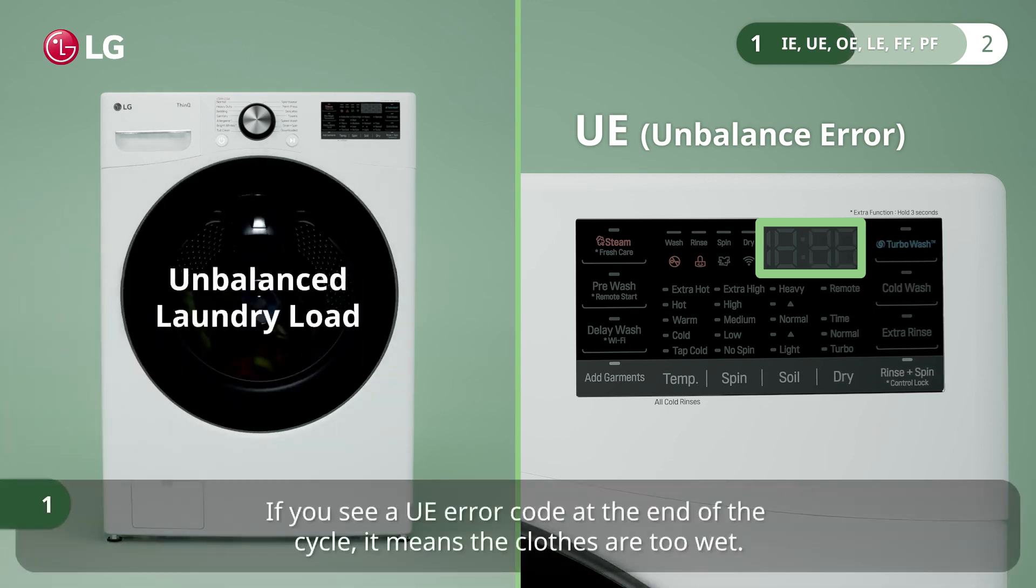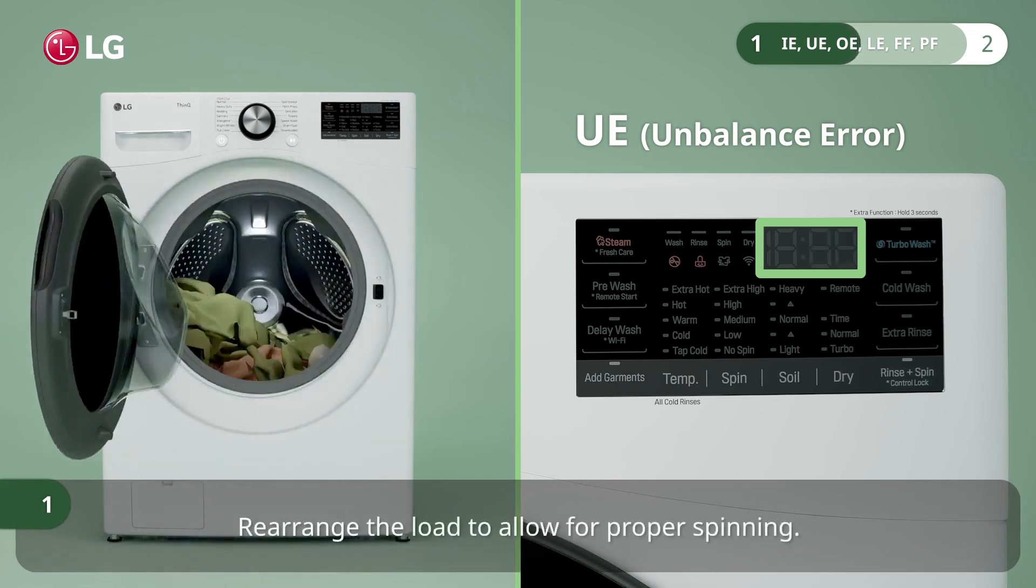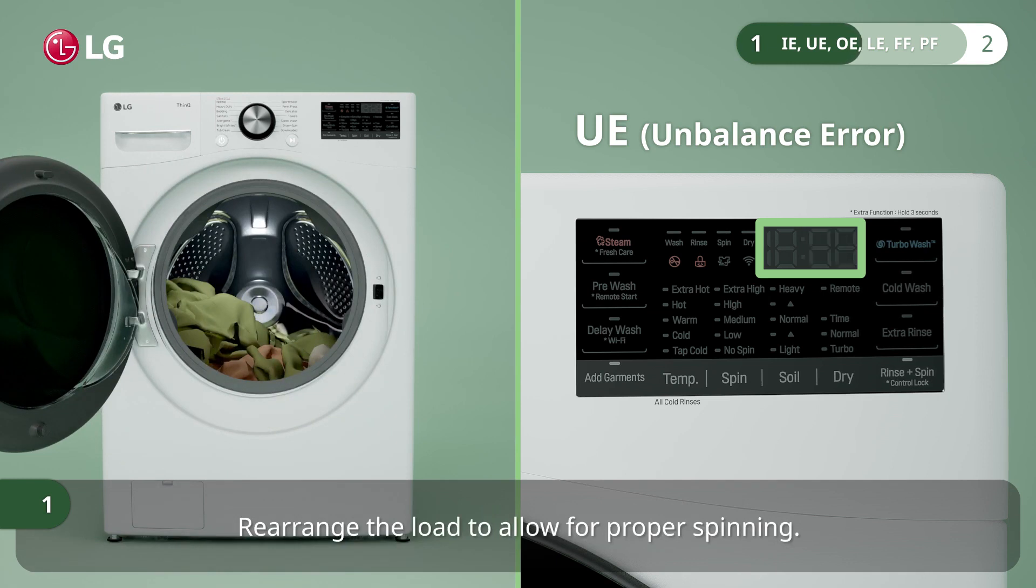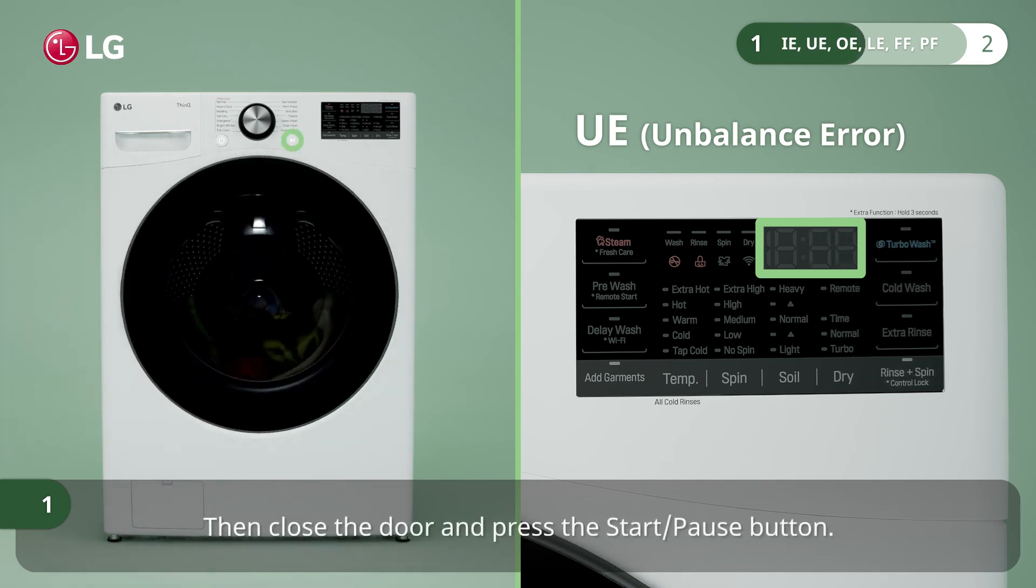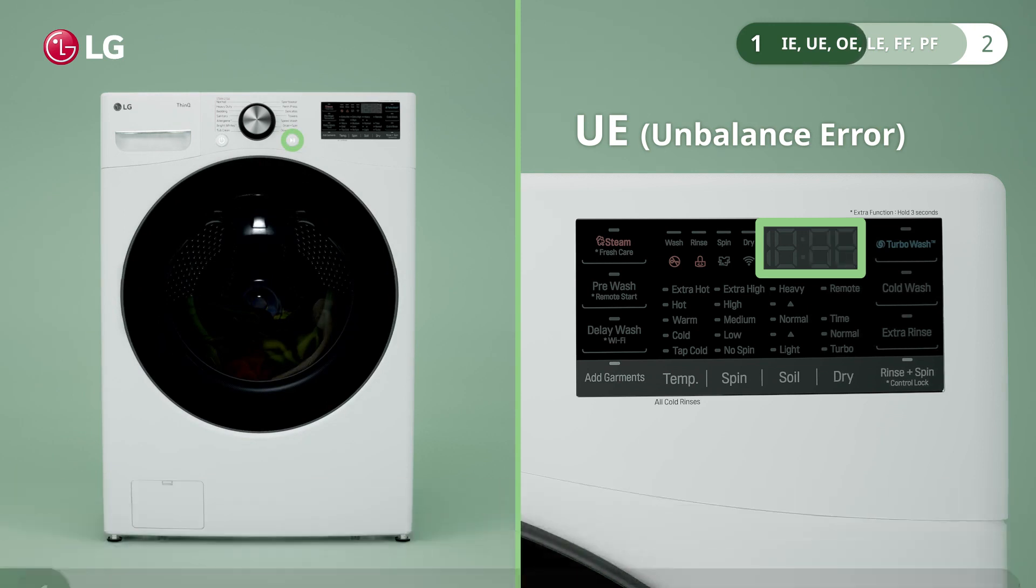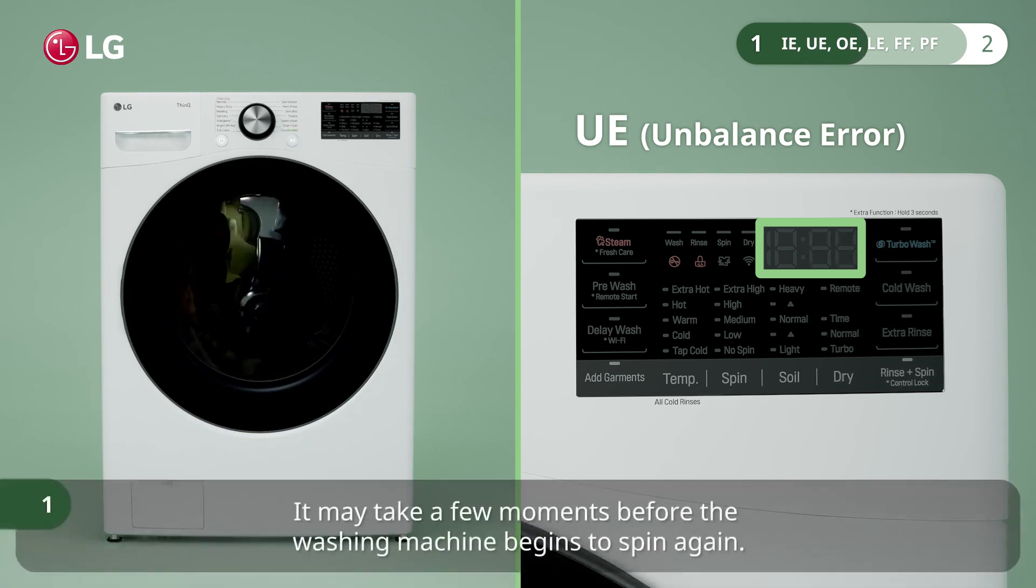If you see a UE error code at the end of the cycle, it means the clothes are too wet. Rearrange the load to allow for proper spinning, then close the door and press the start pause button. It may take a few moments before the washing machine begins to spin again.